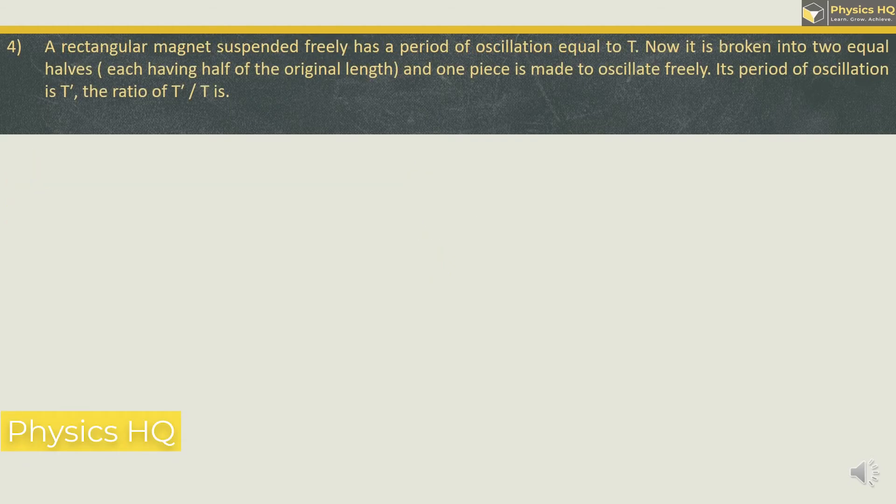A rectangular magnet suspended freely has a period of oscillation equal to T. Now it is broken into two equal halves each having half of the original length. And one piece is made to oscillate freely. Its period of oscillation is T prime. The ratio of T' / T is. Let us see the period of oscillation.